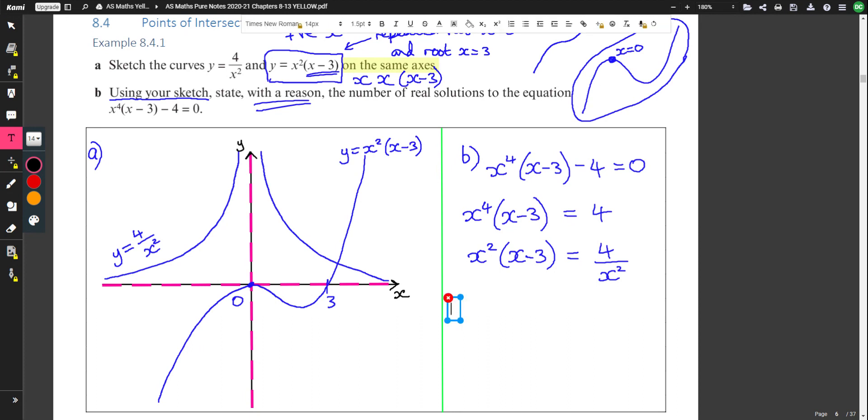So let's answer the question now. State with a reason the number of real solutions to this equation. So there will be, let's look at the graph, how often do they intersect? Just the once. After they intersect, the cubic then goes up to infinity, the asymptote heads towards the x-axis. On the other side, these two sections on the left, they're never going to meet. So there will be one real solution. Here's the reason. Because the graphs intersect once.